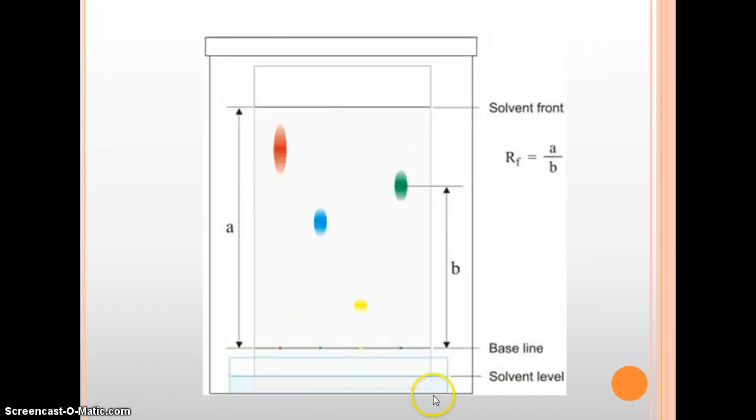So here we have a sample chromatography. Your solvent is going to be down here and you're going to have a baseline drawn in pencil so that the solvent can't grab it and draw it up. You want the solvent below your baseline.